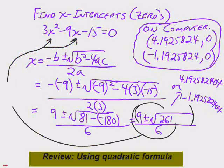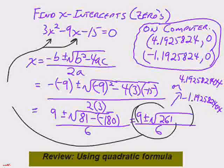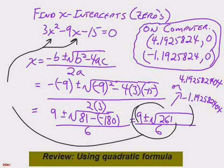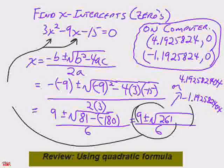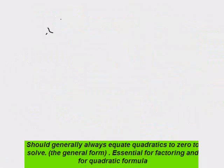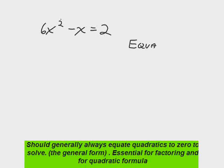In theory, if you took that 9 plus or minus the square root of 261 divided by 6 and plugged it back into the original equation, you would end up with the answer. It would all work out to be zero. And I think we did that in class. So the general rule is to always equate your quadratics to zero to solve. It's essential for factoring and the quadratic formula. So you always equate to zero.